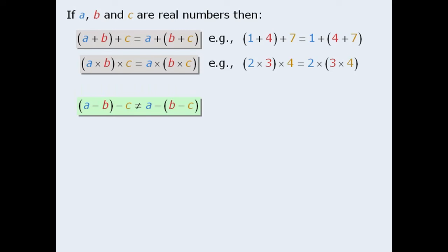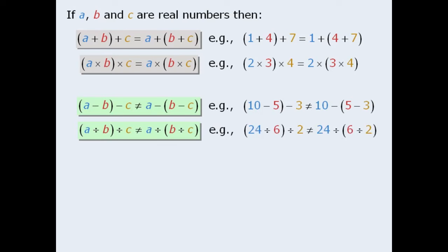Now, subtraction, on the other hand, is not associative since changing the brackets changes the results. The following example demonstrates this. Similarly, division is not associative as is demonstrated in this example.